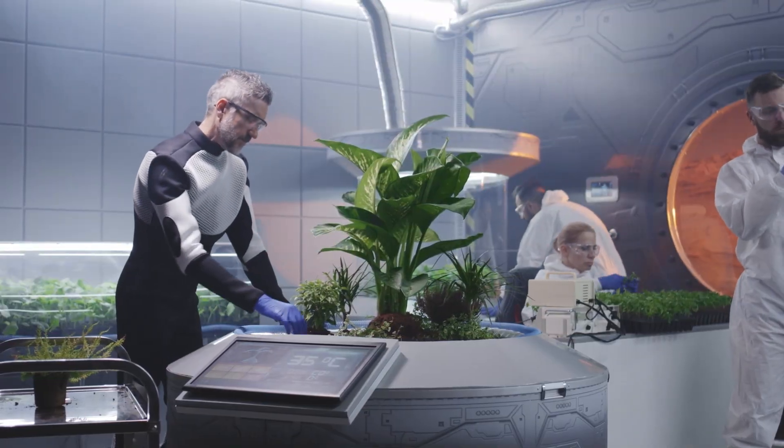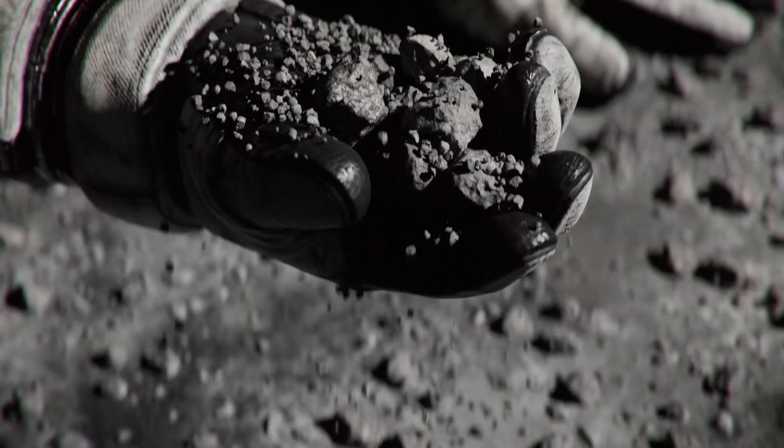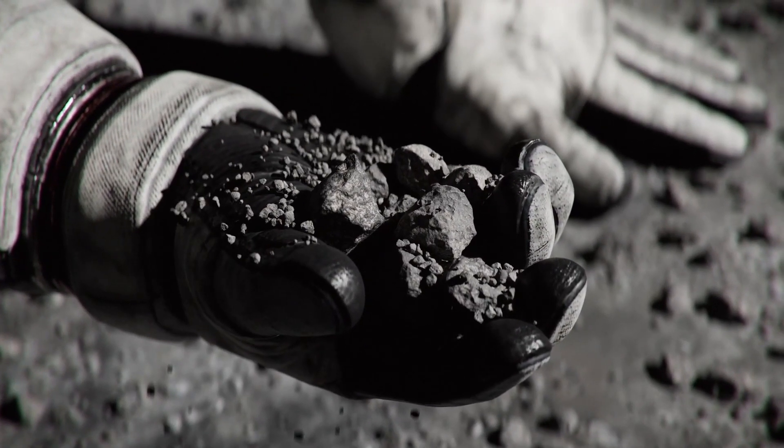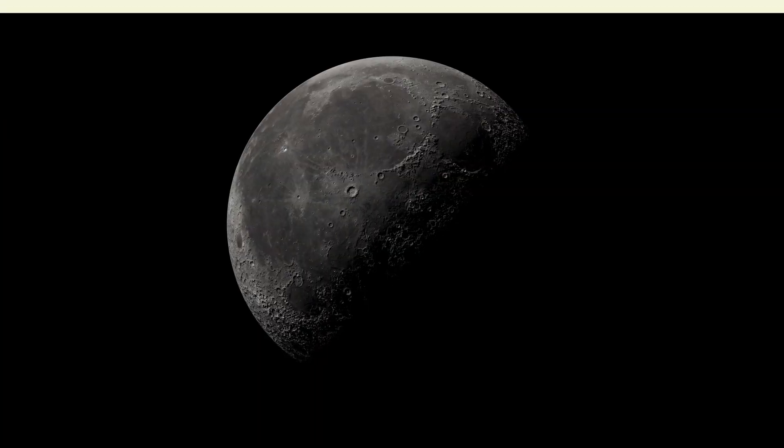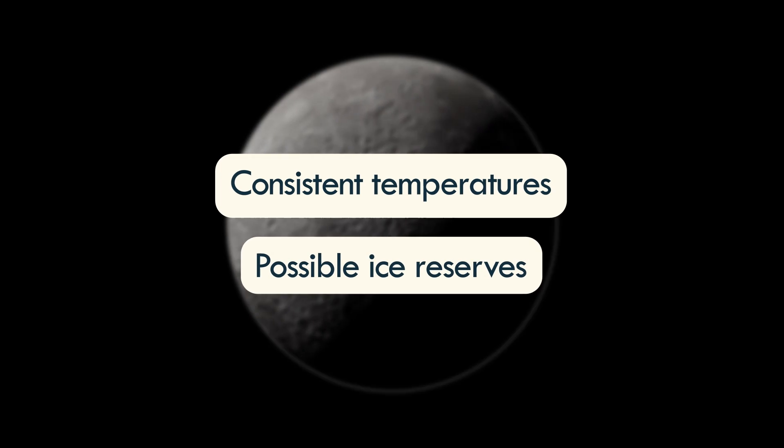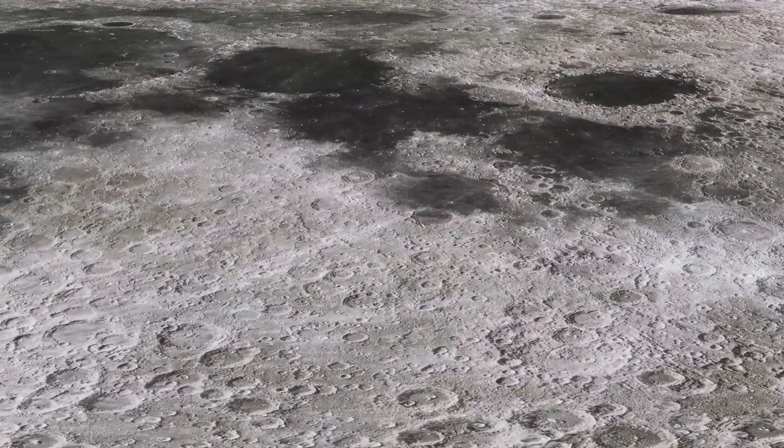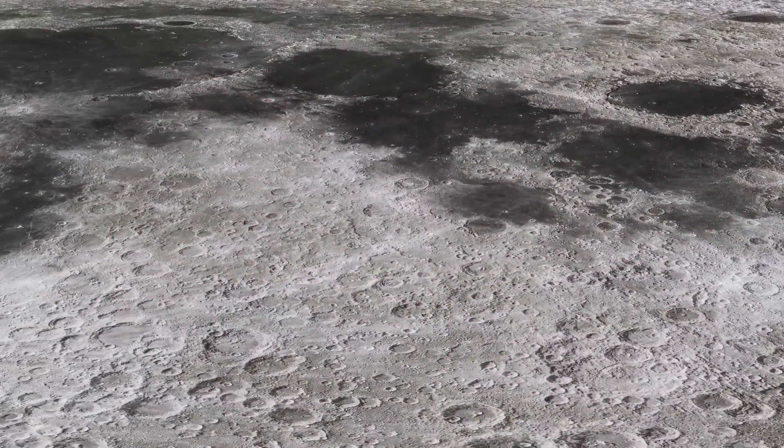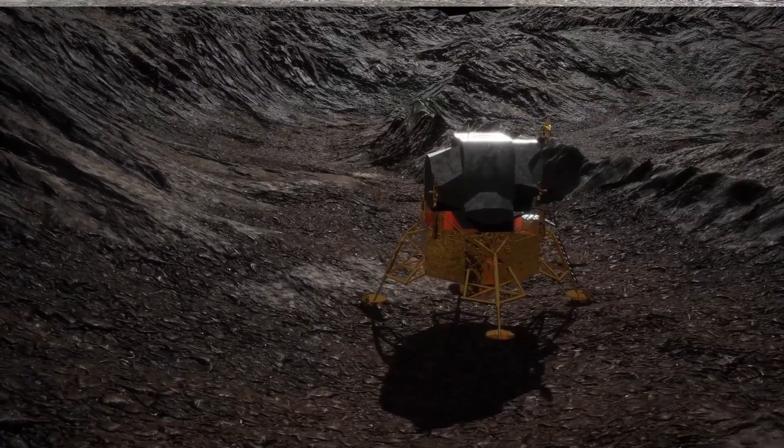Advocates also suggest that the destructive regolith might serve as a radiation shield or provide oxygen itself. The Moon's poles could be ideal for habitation, with their consistent temperatures and possible ice reserves, despite the sharp and uneven terrain, which would pose a considerable challenge to landing and construction.